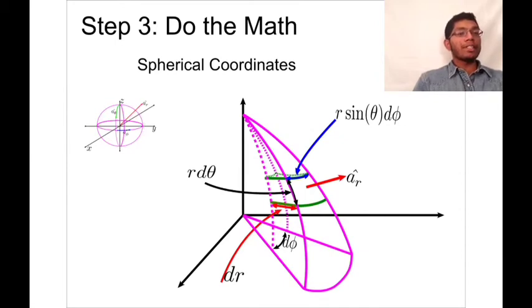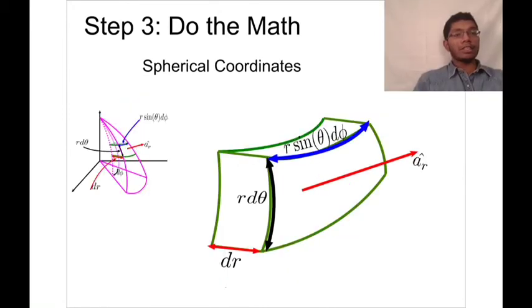I'm going to try and make this more clear by blowing up this smaller chunk that I've taken out over here. Here you can see I've just pulled out this chunk from here and blown it up over here. Here you can see there's a dr element, there's an r d theta, an r sin theta d phi. Now, if I make this chunk even smaller by cutting it into tinier and tinier pieces, I'm going to get something that looks a lot like a prism, like a rectangular prism.